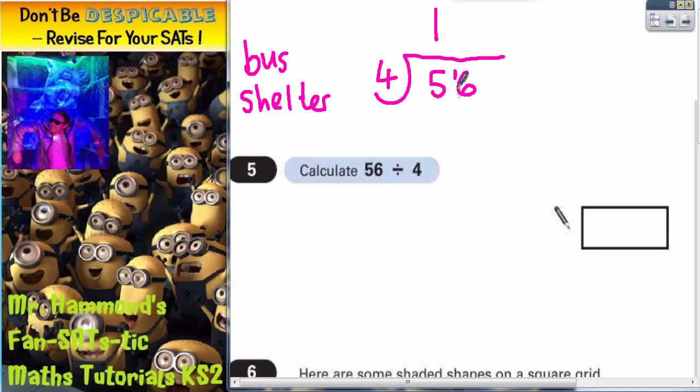Now we've already dealt with the 5, so now we move on to the 16. How many 4s go into 16? The answer is 4 4s of 16. And there's none left over, so there's nothing else to carry over, therefore the answer is completed. So 56 divided by 4 is 14, because the answer appears at the top. So 14 is what goes in there.